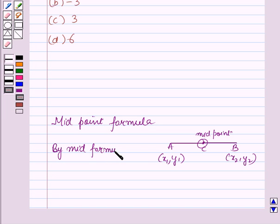then by midpoint formula, coordinates of the midpoint C are ((x₁+x₂)/2, (y₁+y₂)/2).